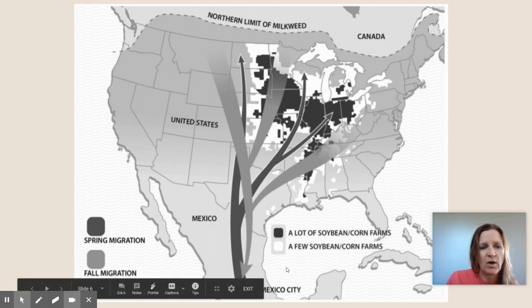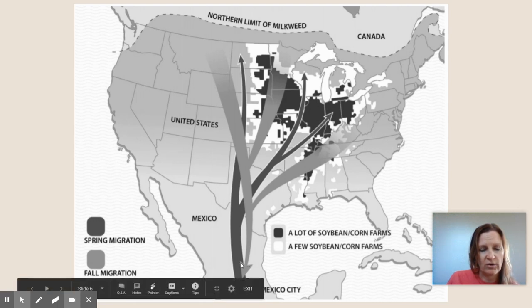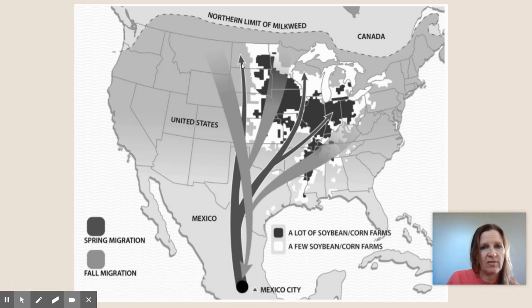We can see that this is the monarchs' route where they migrate down to Mexico in the winter, and then we can see where they migrate back up into the United States, and sometimes into the very southern part of Canada in the spring.